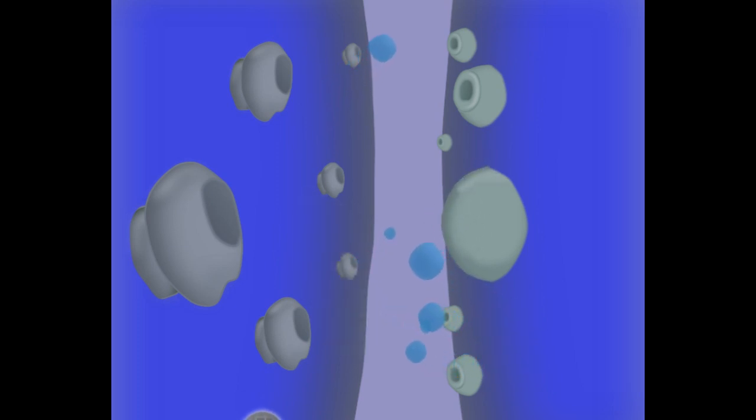And third, the MDMA now inside the nerve cell invades the vesicles and pushes more serotonin out through the nerve cell membrane.